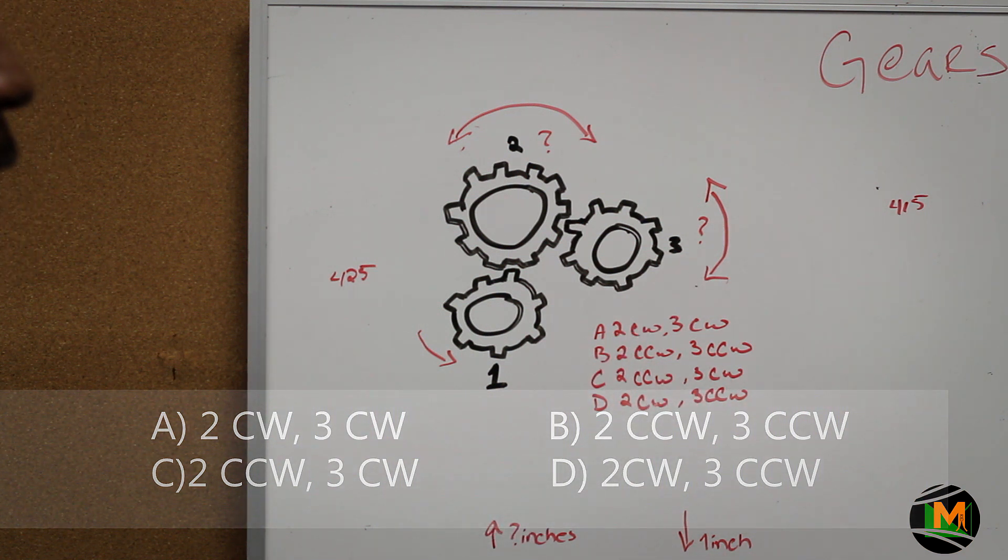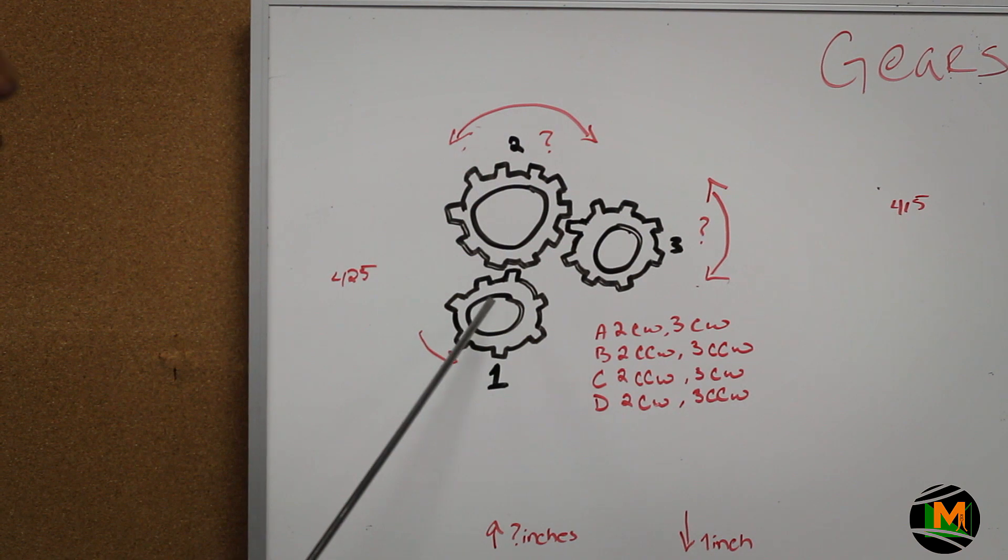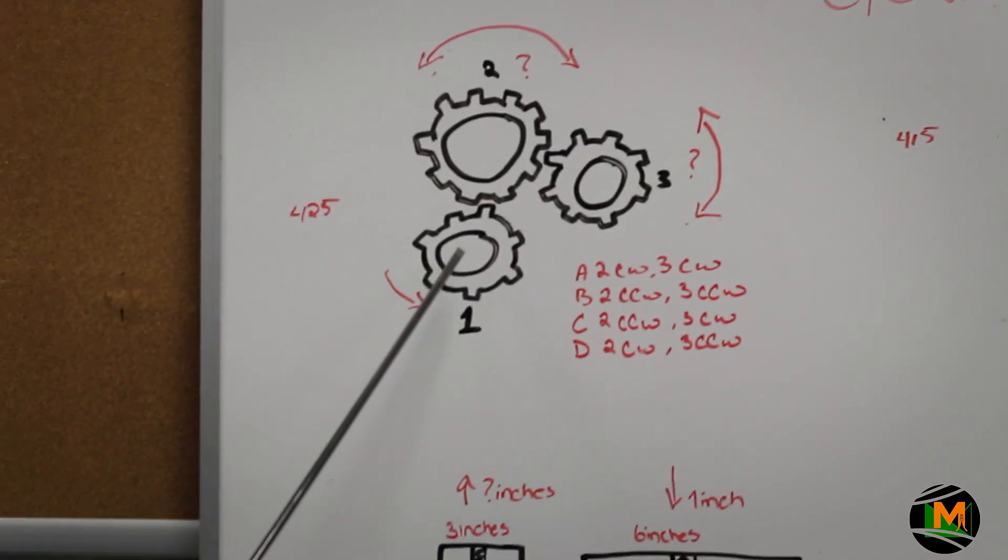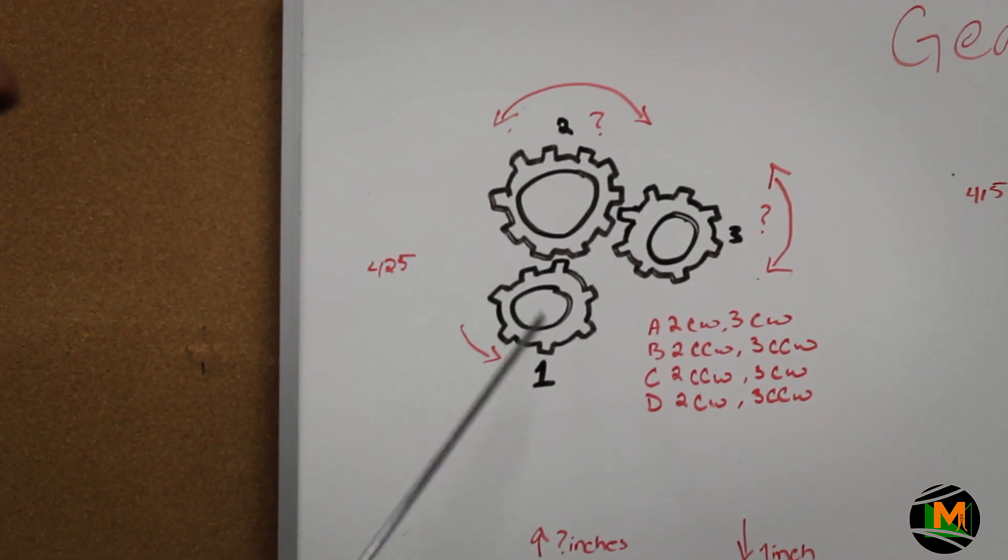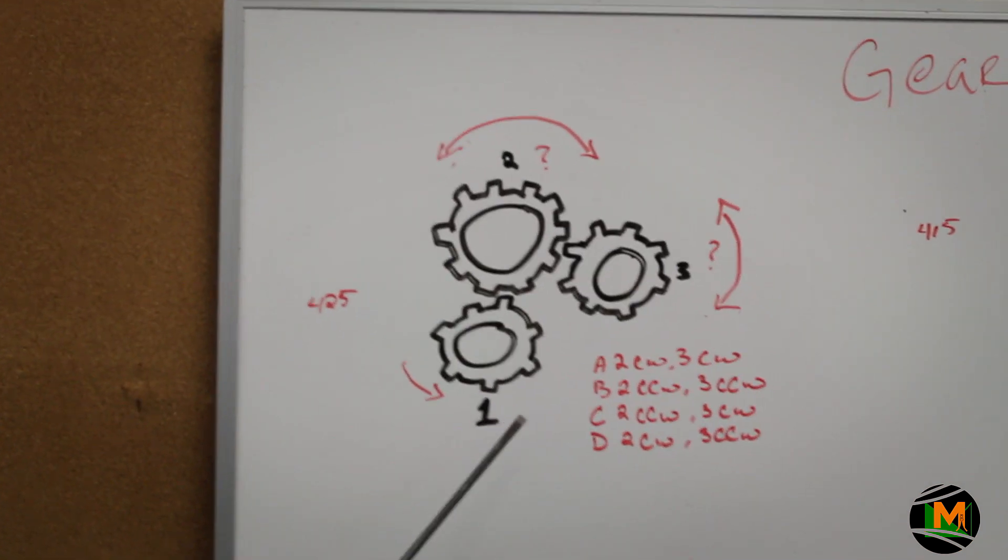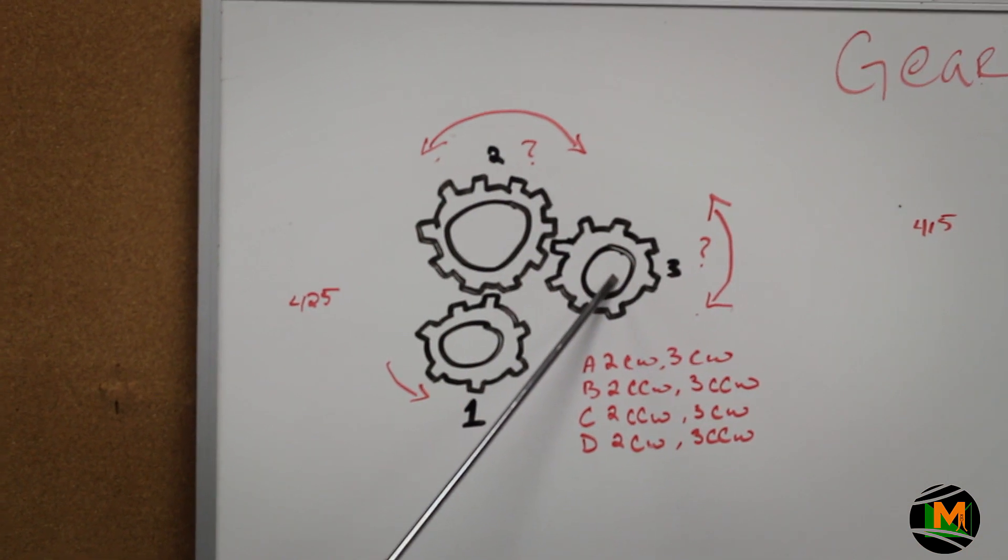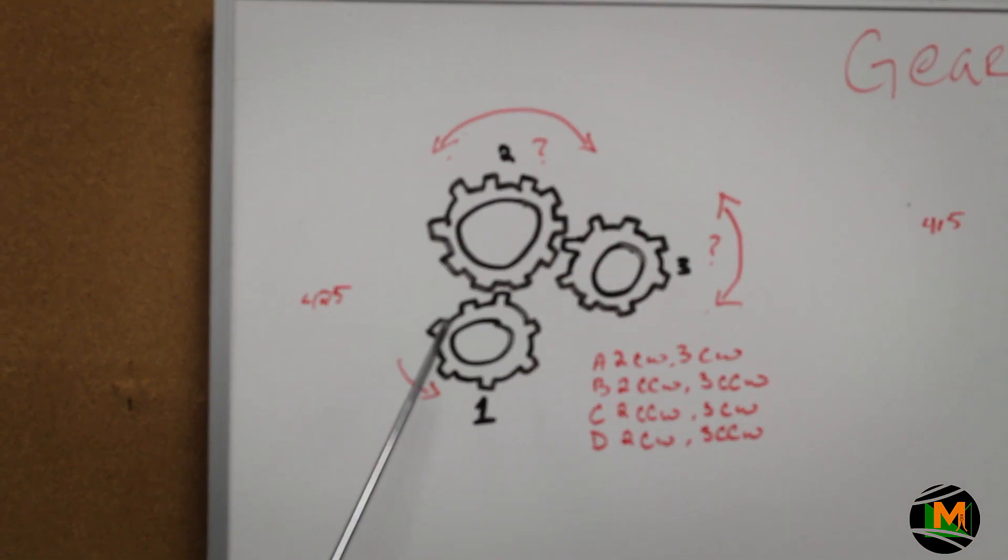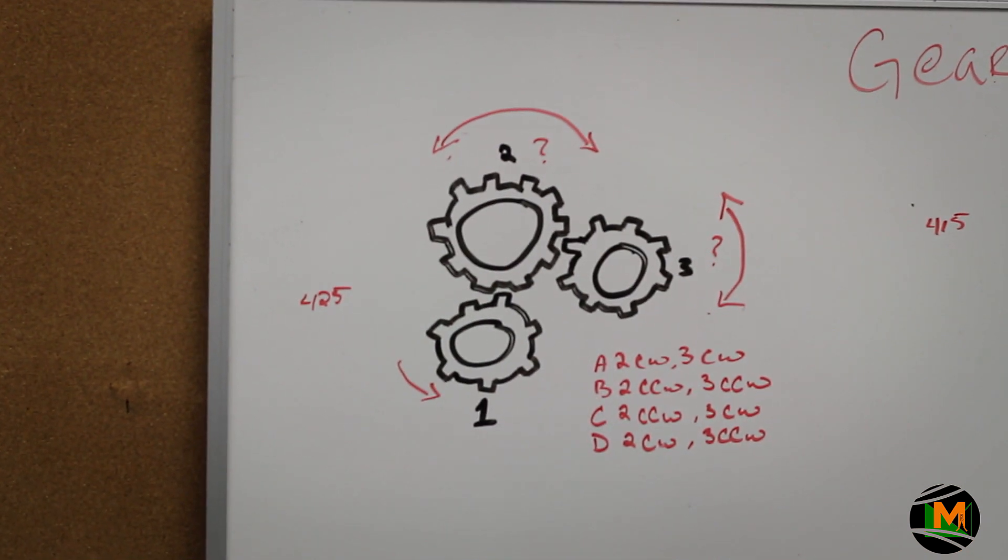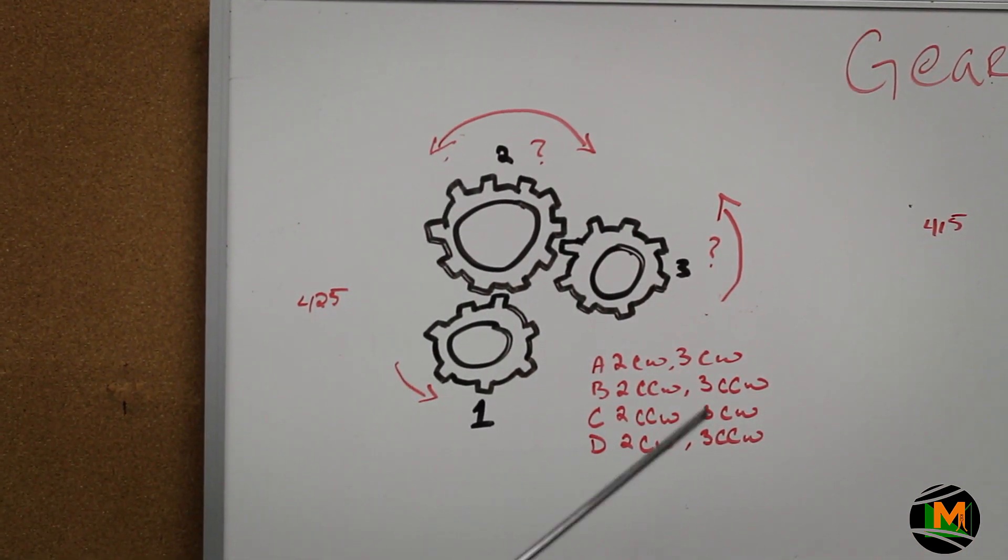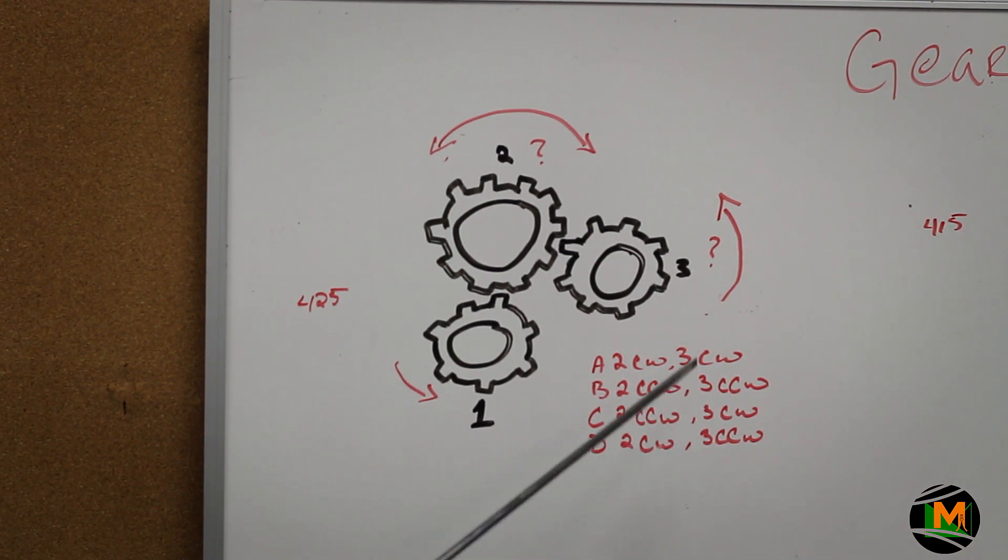The simplest way to figure out this problem is any gear that you start with, which will be gear number 1, the opposite gear always moves in the same direction. So in this instance, gear number 1 and gear number 3 are going to move in the same exact direction. Gear number 1 is moving counterclockwise, so is gear number 3. So that weeds out option A and option C.